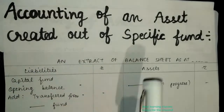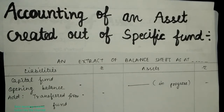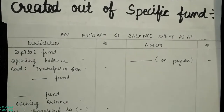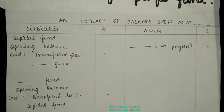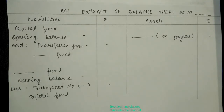Next topic: accounting of an asset created out of a specific fund. When a specific fund organization creates an asset — like a building or machinery — we prepare a balance sheet extract. Whatever fund goes to the balance sheet, we show the particular asset being built with that fund and how it is treated. If building construction is in progress, it is shown as 'work in progress' on the asset side.